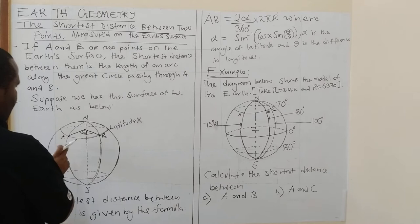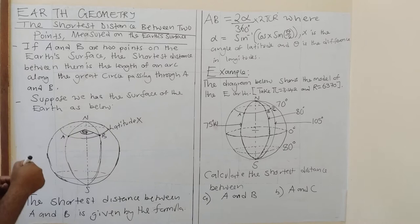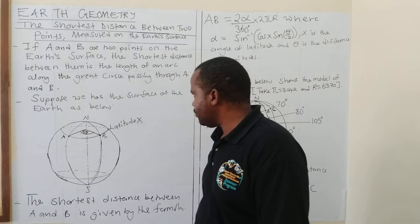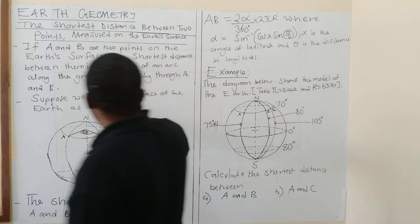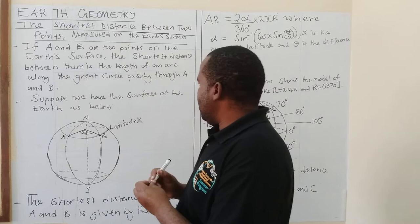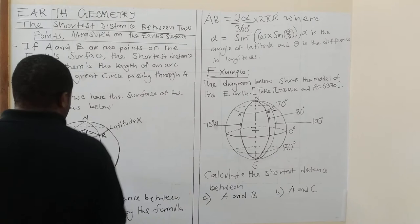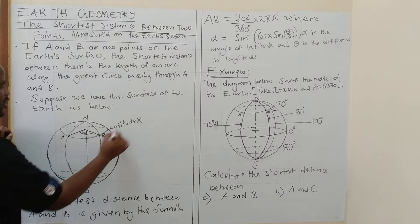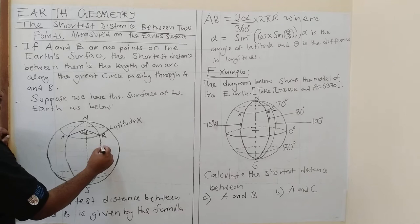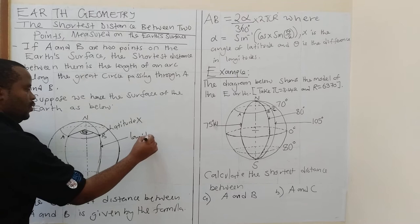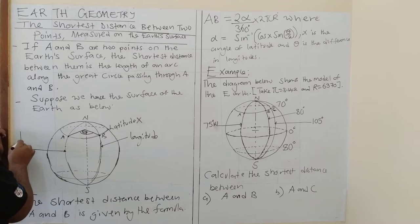So if you want to find the shortest distance between A and B, you move along the great circle passing through these two points. Now, suppose we have the surface of the earth as shown below. This is the latitude — latitude X, or angle of latitude. This one is a longitude, and this one is a longitude as well. So, how do I find the shortest distance?